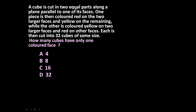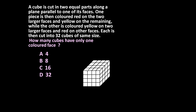One cube is cut into two parts along a plane parallel to one of its faces, and each part has 32 cubes. This means there are 64 cubes total, which means it is a 4 by 4 by 4 cube, giving us 64 unit cubes.